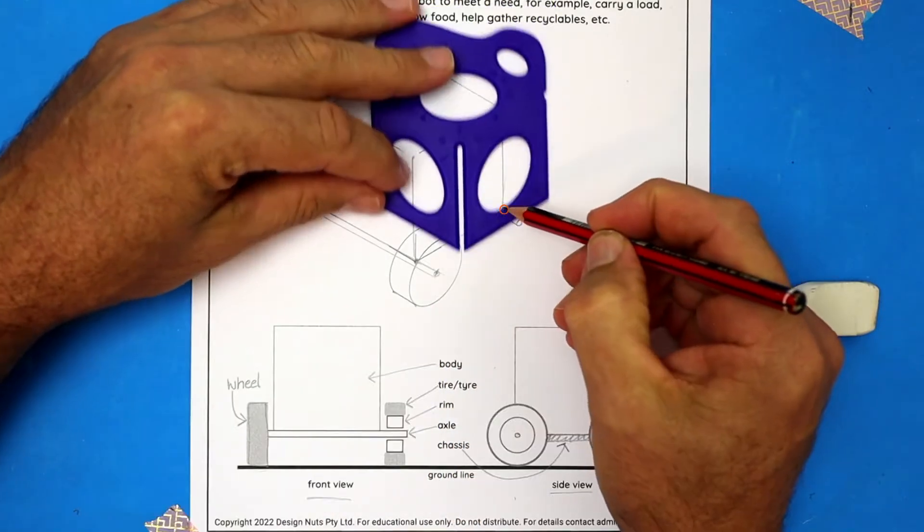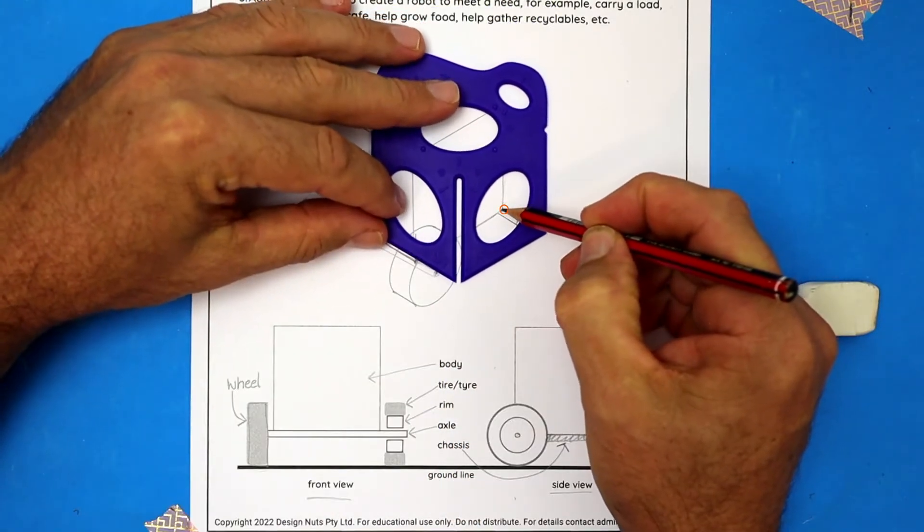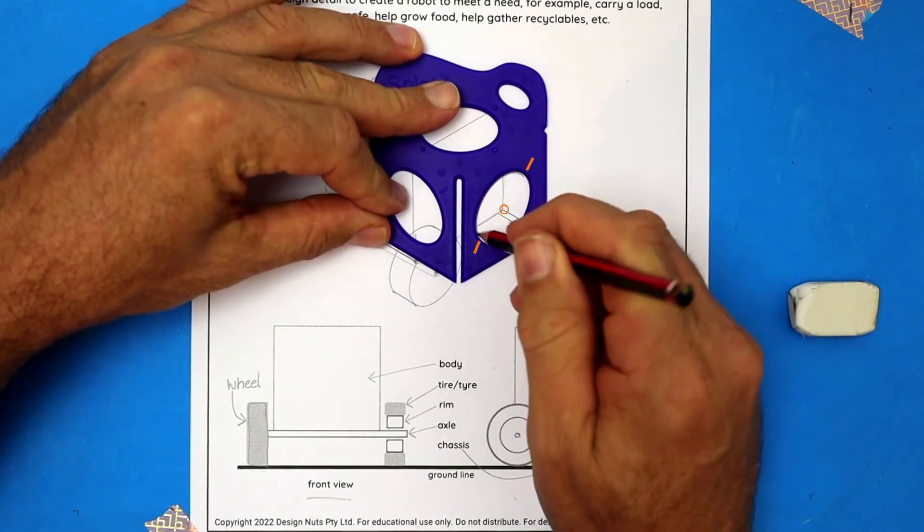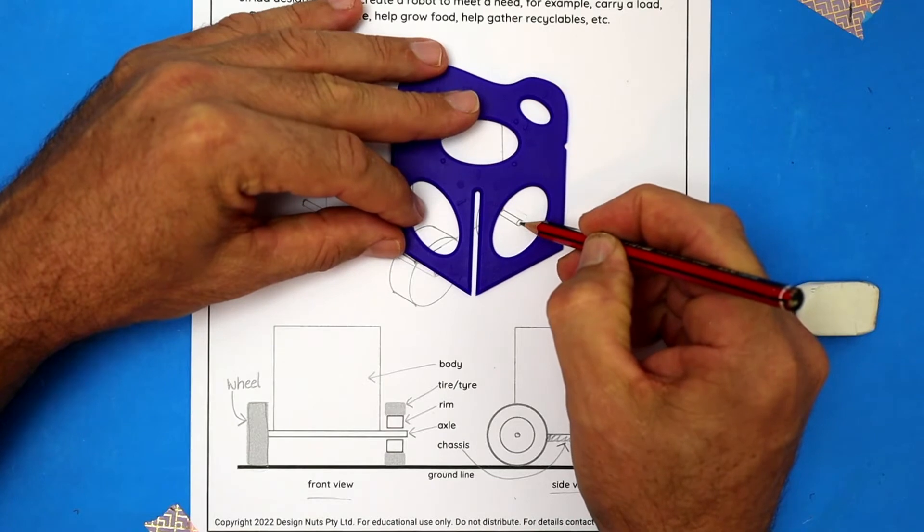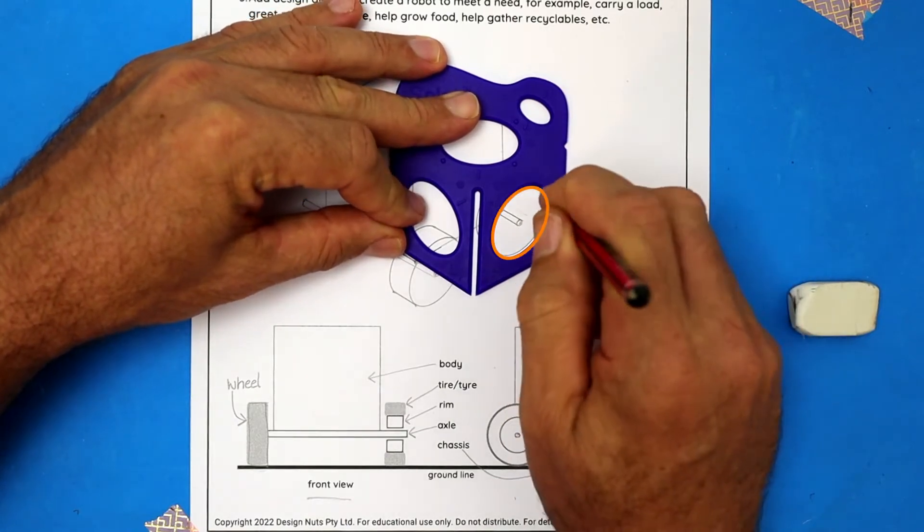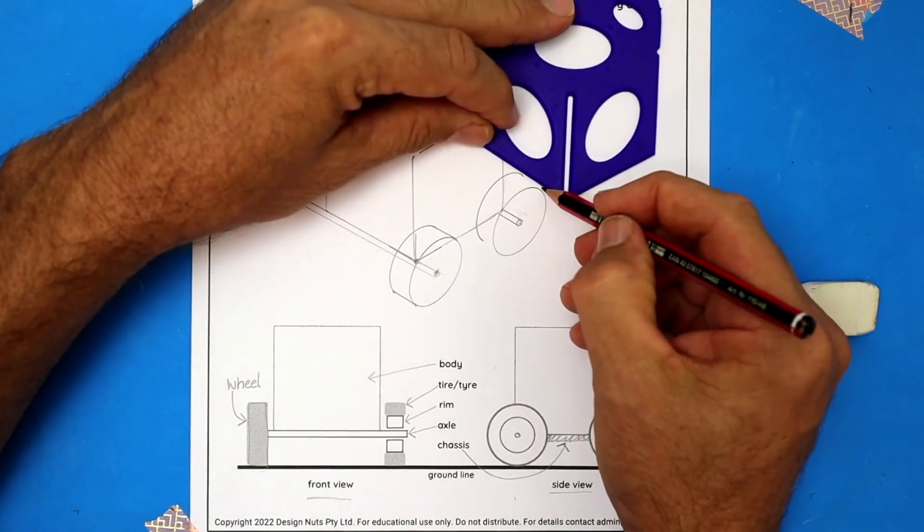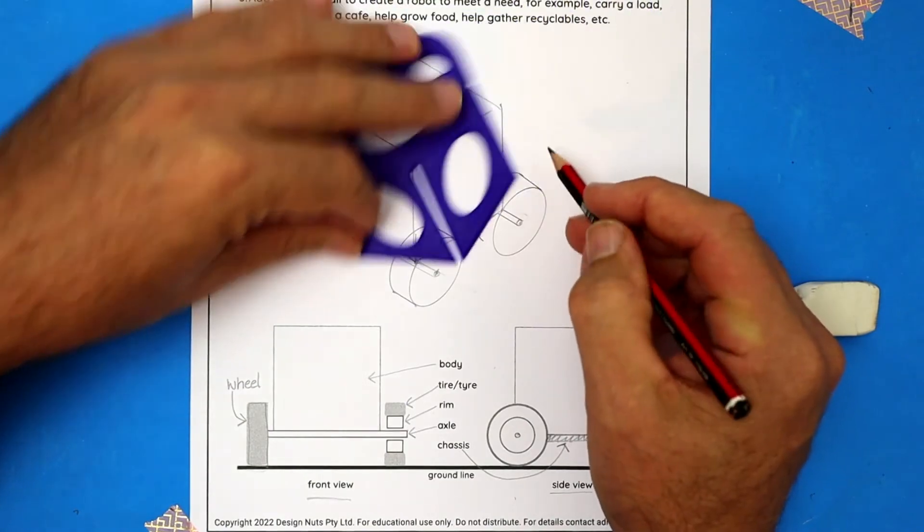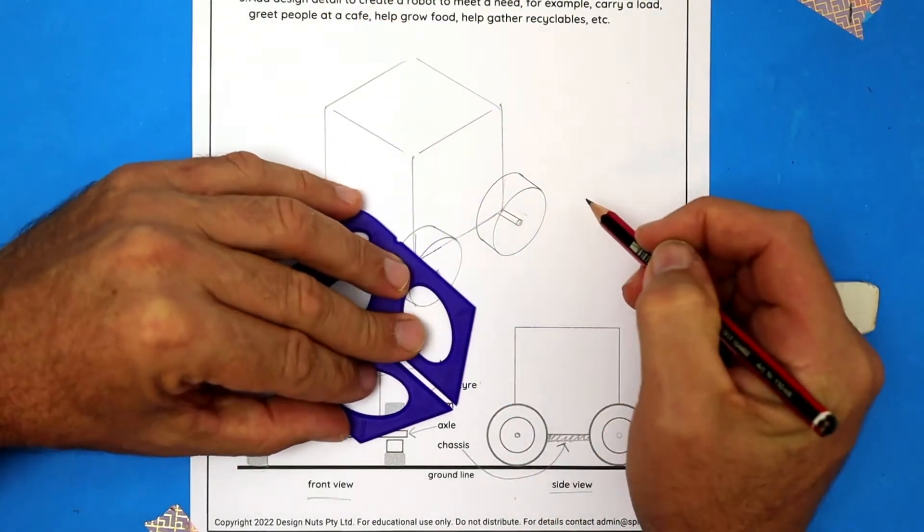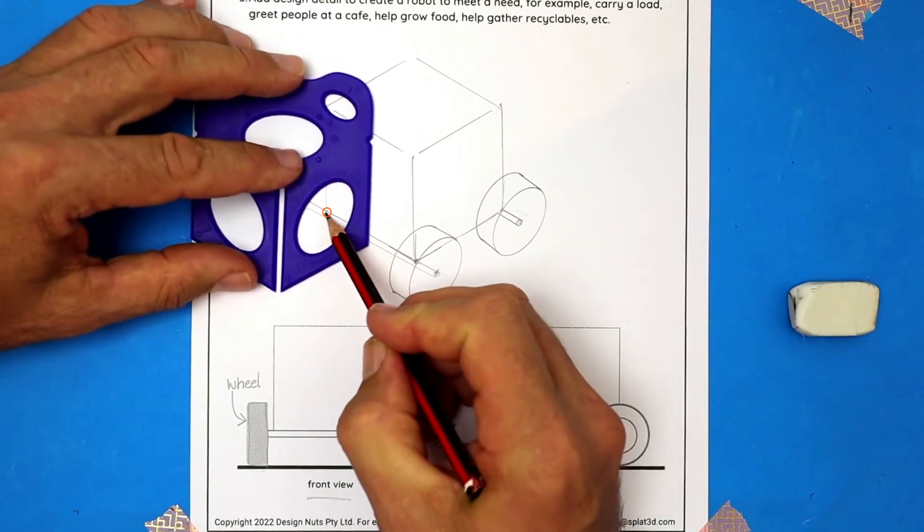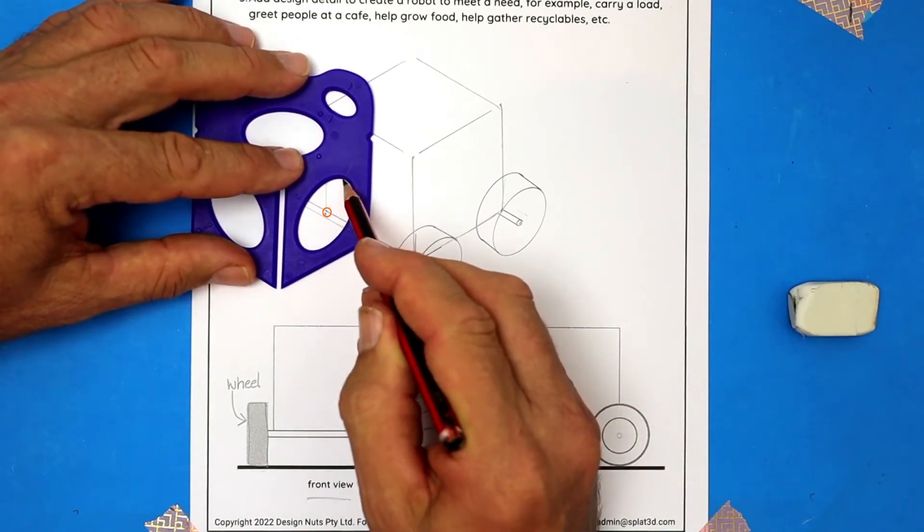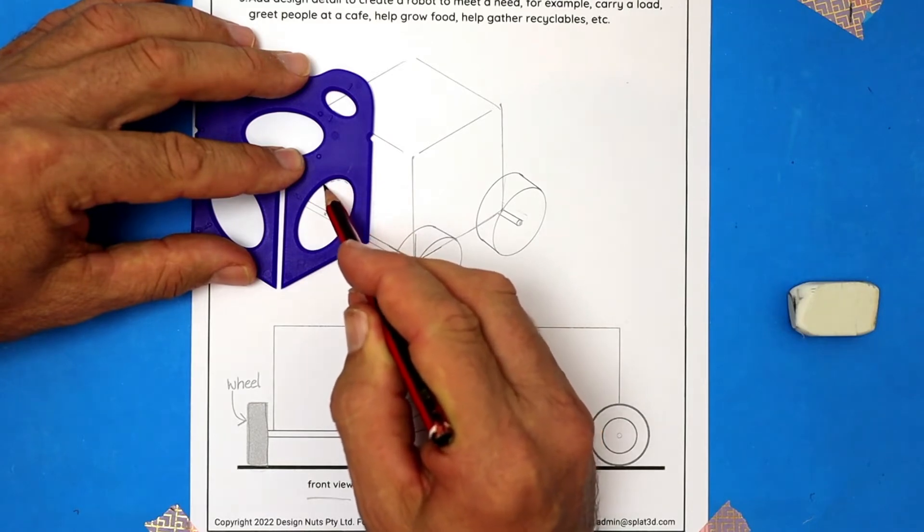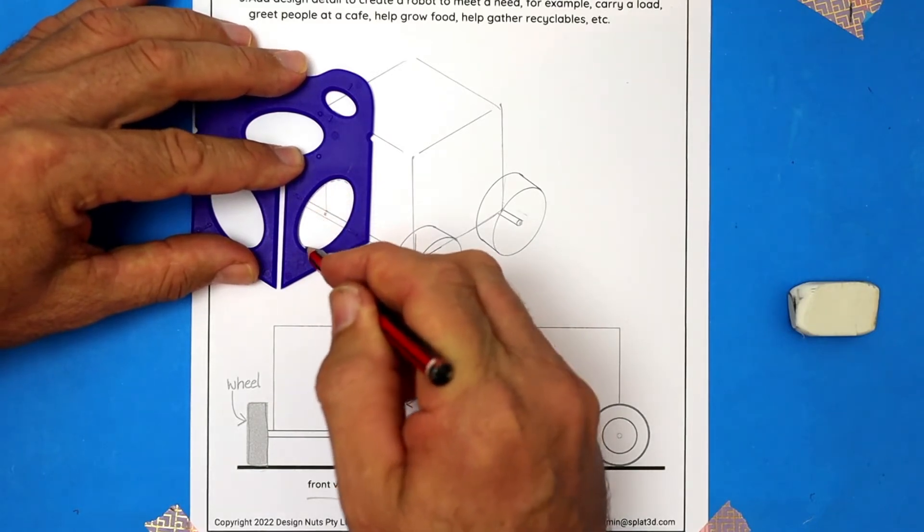We're going to repeat the exact same procedure from the back. Remember we drew half an ellipse from the back of the axle. Then at the front of the axle, we drew the full ellipse in. Next we drew two short lines to connect the ellipses.